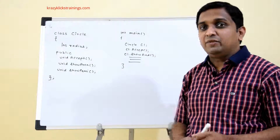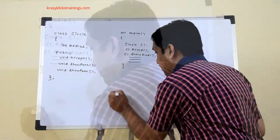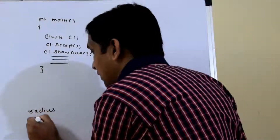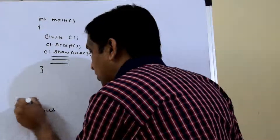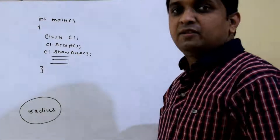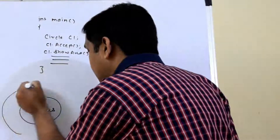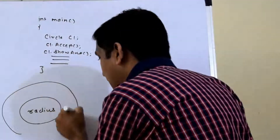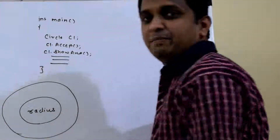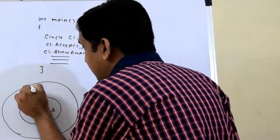We can visualize this as layers: radius, the data member, is at the core. Outside it is a layer of member functions — accept(), showArea(), and showPerimeter(). Outside that is the main function.